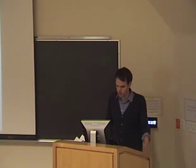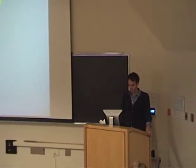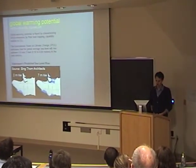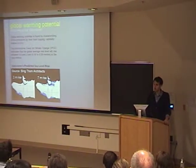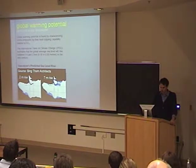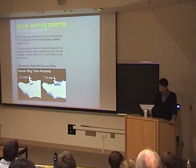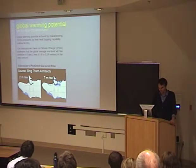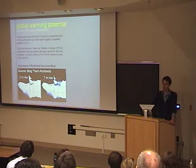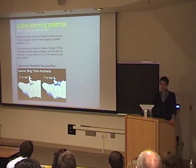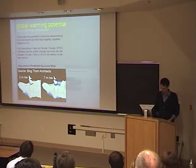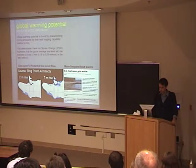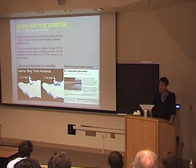Global warming potential is measured in kilograms of CO2 equivalent, and all emissions during the production of the building are quantified and characterized this way. What does this mean for Vancouver? Big Tom Architects did a study on sea level rise associated with global warming on the Vancouver coast. On the left, a two-meter rise shows some loss of shoreline in South Vancouver. On the right, a seven-meter rise would leave downtown Vancouver as an island. The IPCC estimates 0.6 meters over the next hundred years. We could also see more heat waves like last summer, which would be much more common.